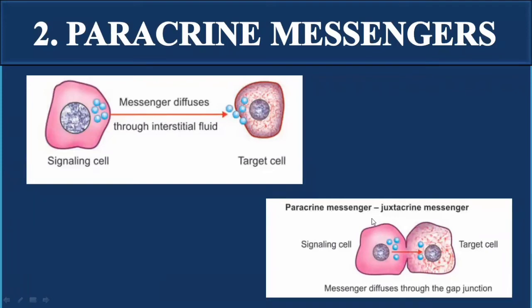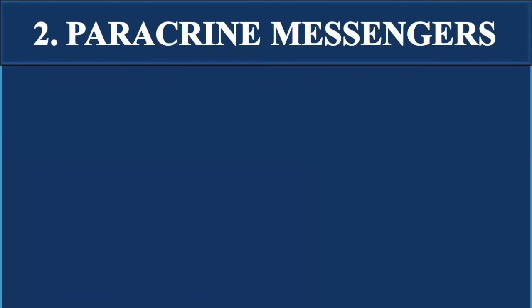A subtype of paracrine messenger is the juxtacrine messenger, in which cells are present very adjacent to each other with a very small gap. In this case, chemical substances diffuse through gap junctions to reach the target cells and perform their specific functions.